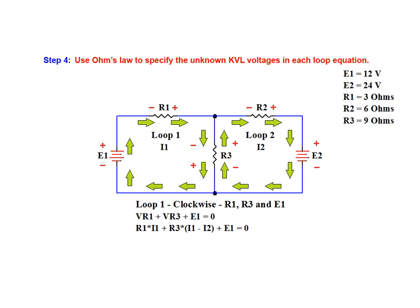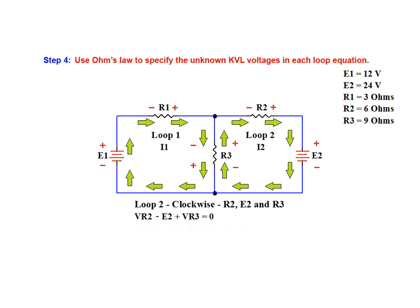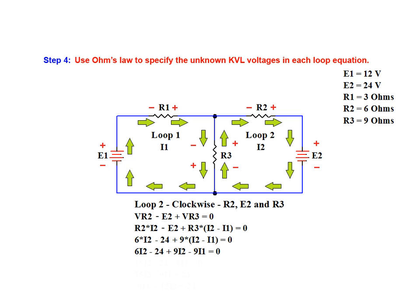We substitute the known resistance and source values into our modified KVL equation for loop 1, then expand the equation and collect like terms to state it with unknowns on one side and a known voltage on the other. We repeat the process for loop 2 to obtain the Ohm's law representation of the loop 2 KVL equation. Notice that when working with loop 2, the I1 current is subtracted from the I2 reference current for the voltage drop across R3. As with equation 1, we substitute in known values, expand, collect like terms, and separate unknown quantities from constant value voltages.